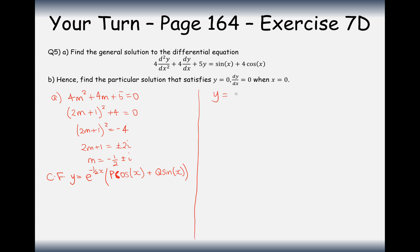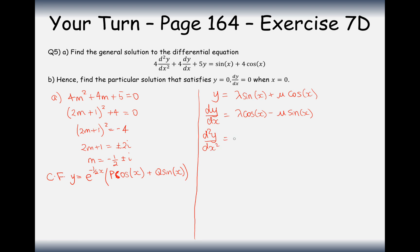So we suggest the particular integral as y equals lambda·sine(x) plus mu·cos(x). Differentiating once gives dy by dx equals lambda·cos(x) minus mu·sine(x). Differentiating again gives d²y/dx² equals minus lambda·sine(x) minus mu·cos(x).